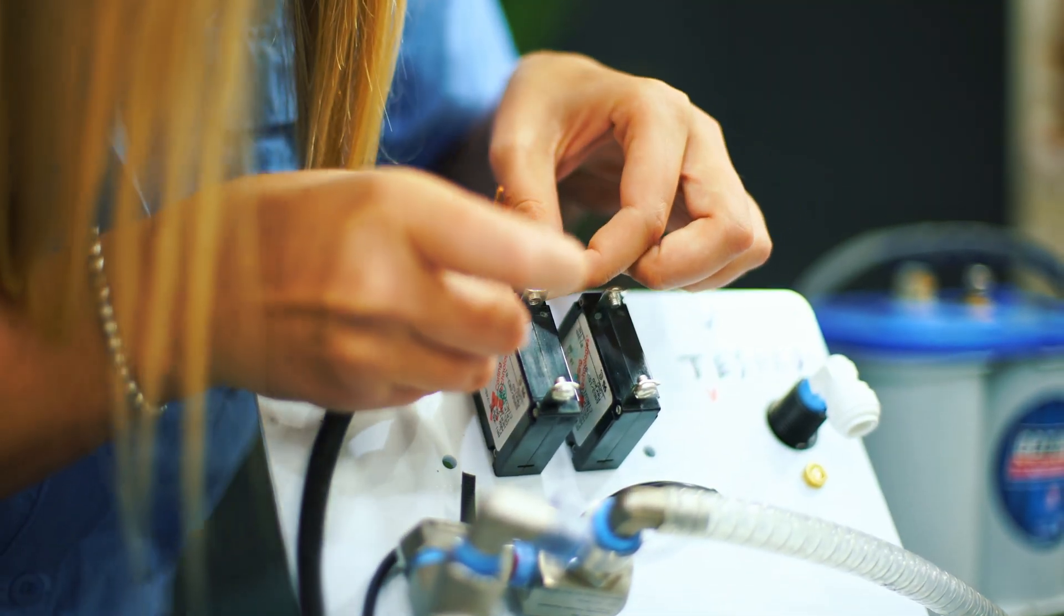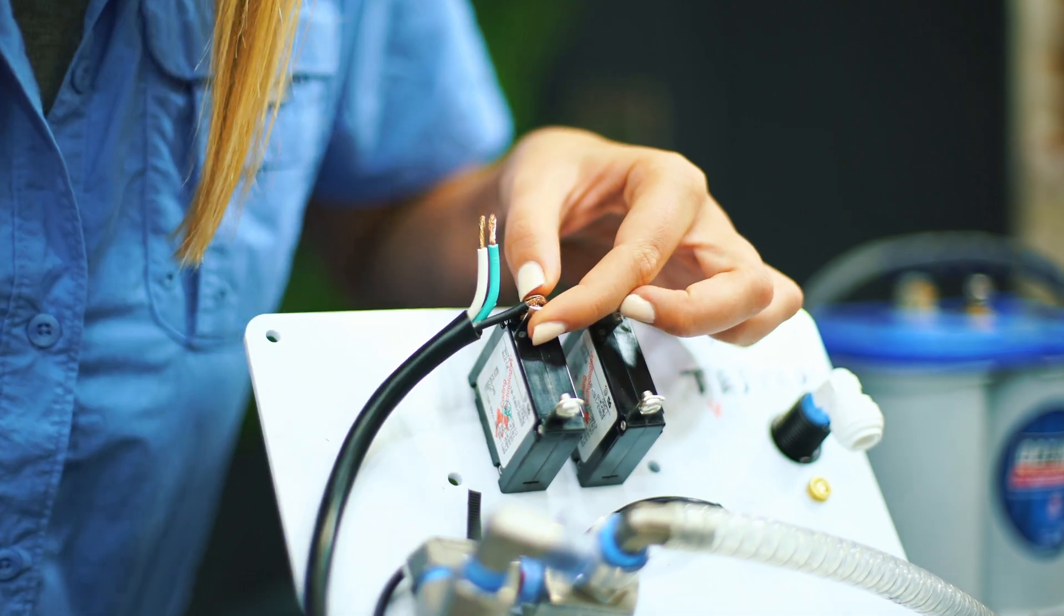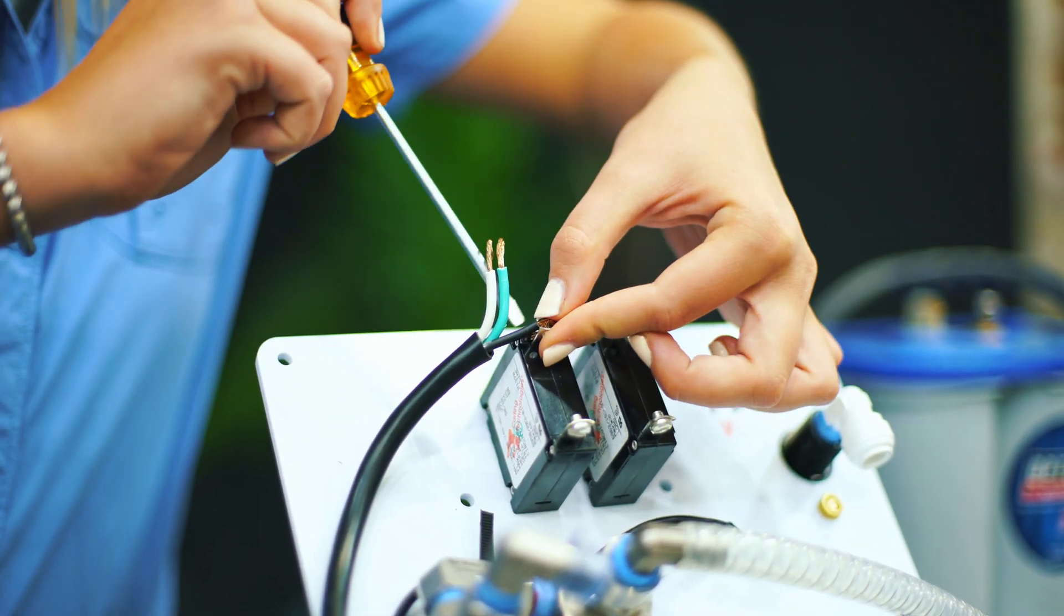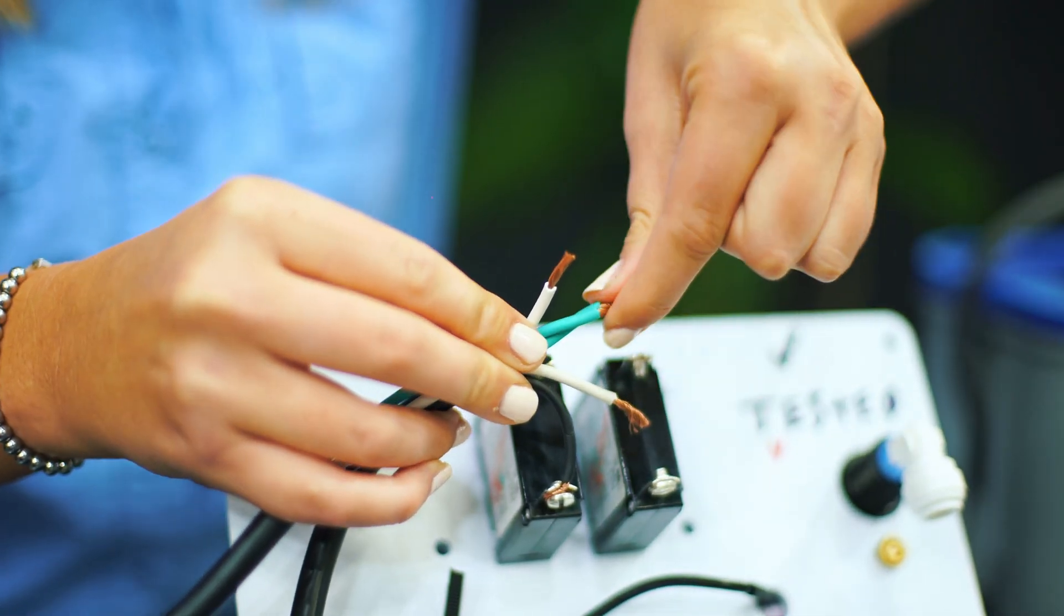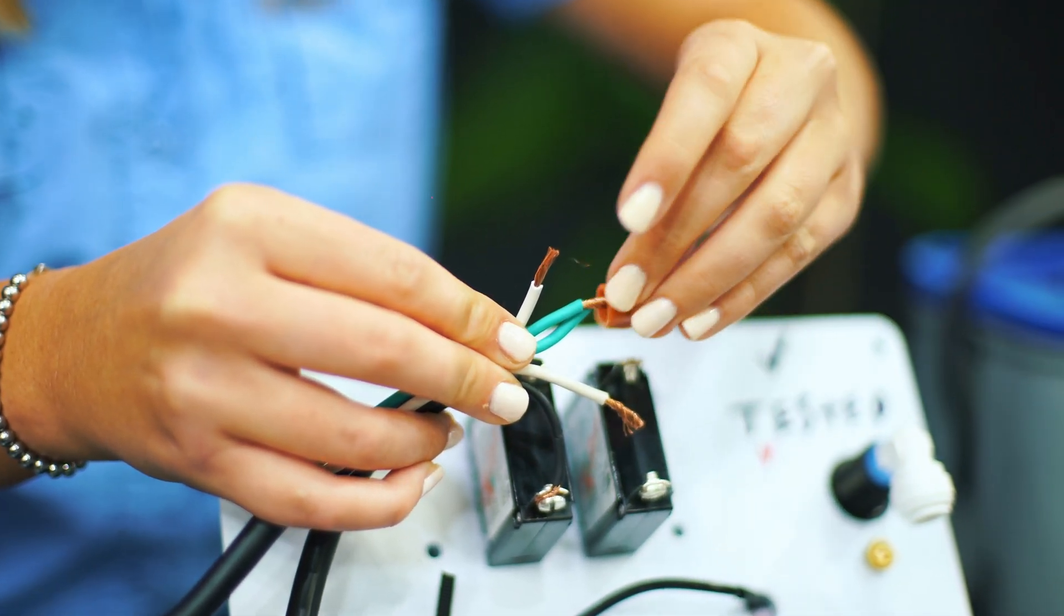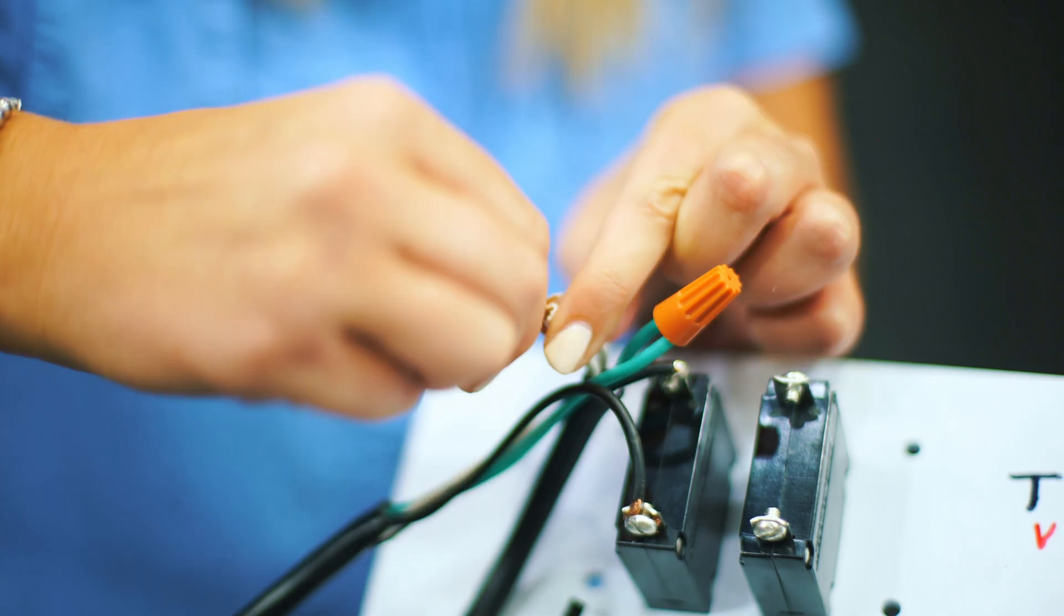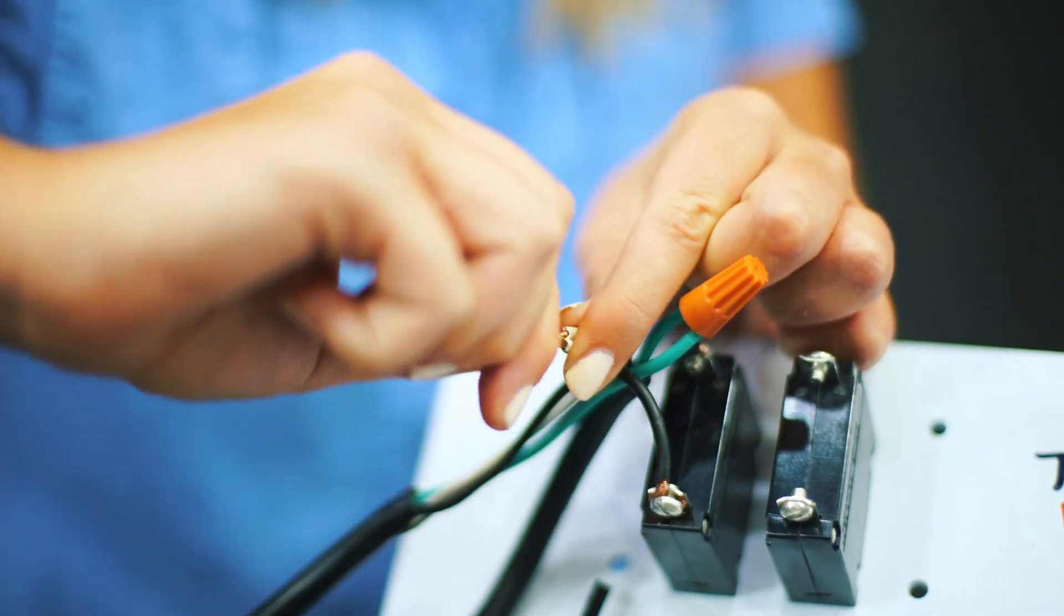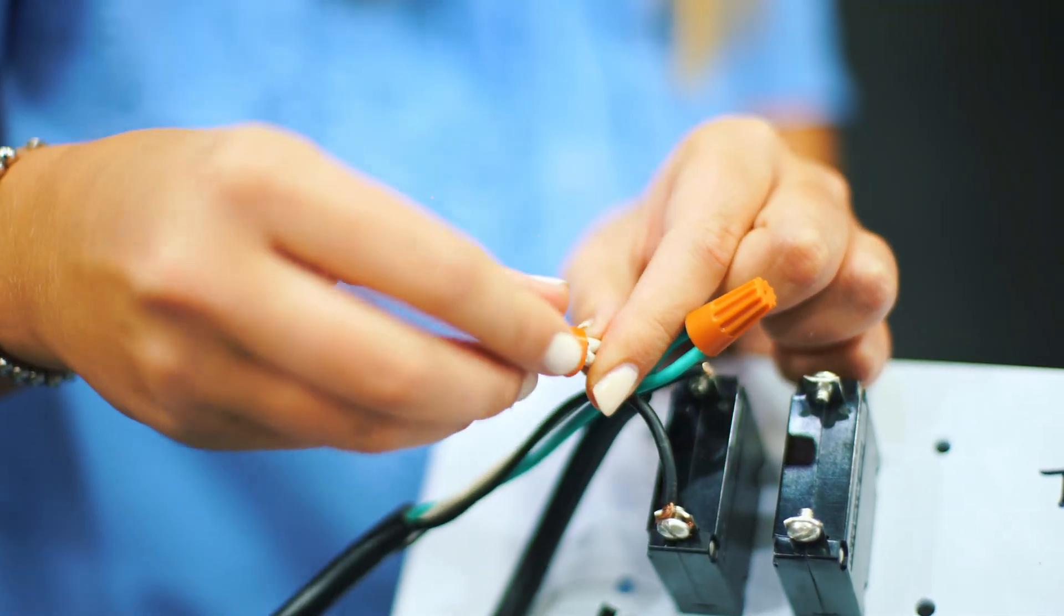Then, we will connect the black wire from the power source to the bottom of the breaker in the same fashion. Then, we will connect the ground, green wires between the main power source and the motor with a wire cap. Then, the hot, white wires between the main power source and the motor with a wire cap.